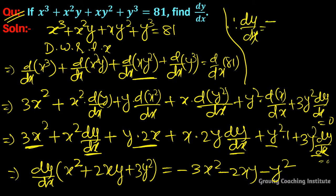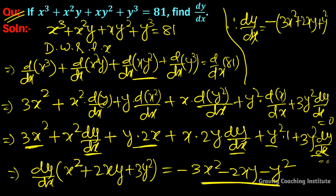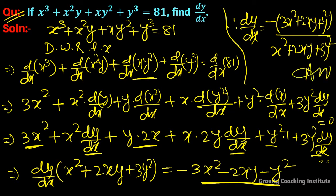Taking the minus common, we get dy/dx = −(3x² + 2xy + y²) / (x² + 2xy + 3y²). So this is our required answer.